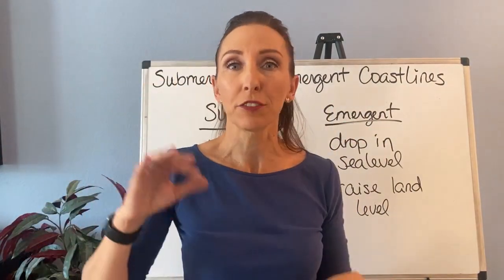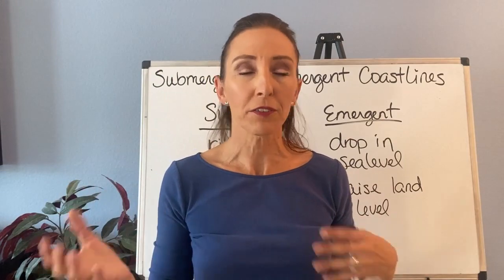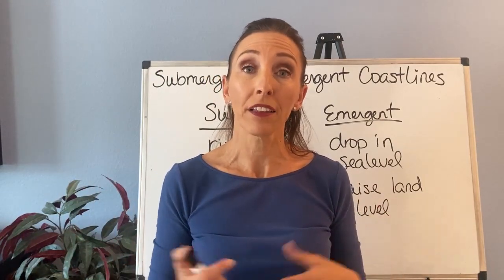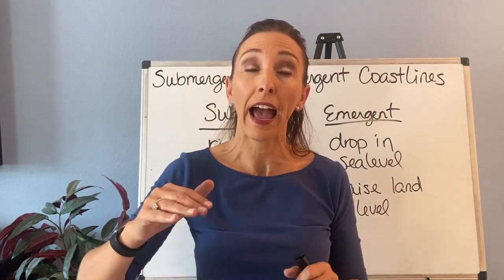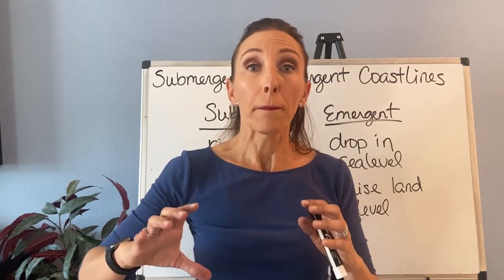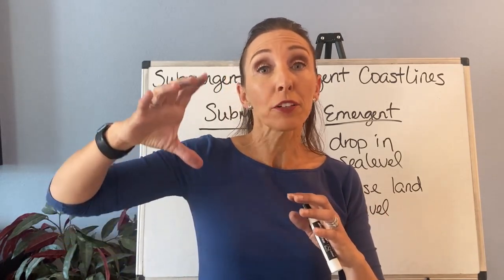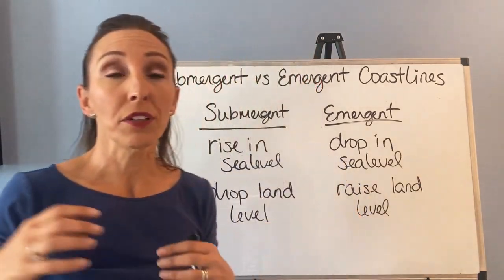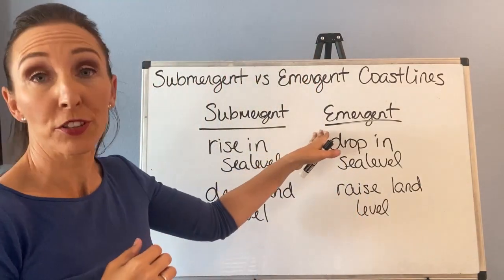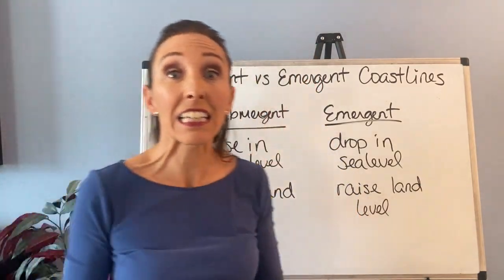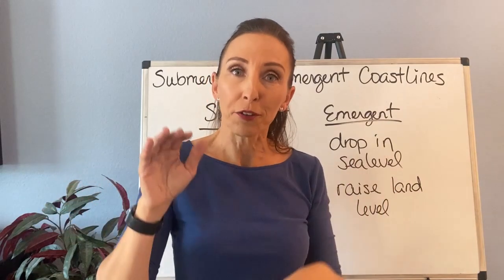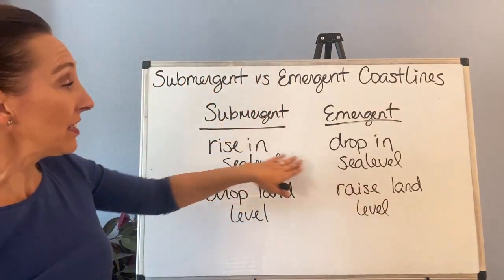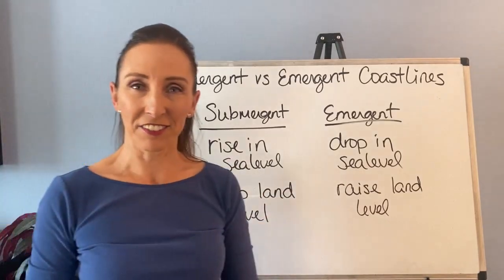There are different ways to affect sea level and land level, and it even has to do with a balance. You could have rising sea level, but if you have a higher rise in land level than sea level, then you can actually have an emergent coastline even with rising sea levels. It all has to do with the balance between what sea level is doing and what land level is doing.